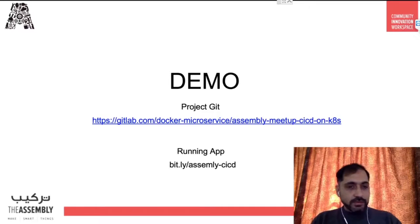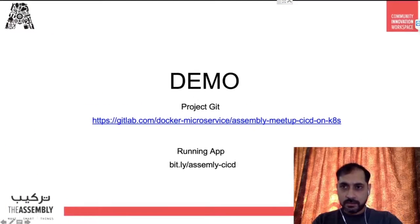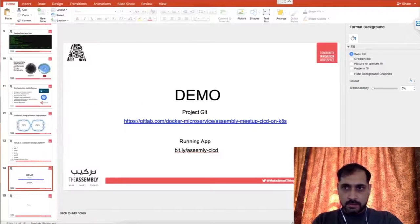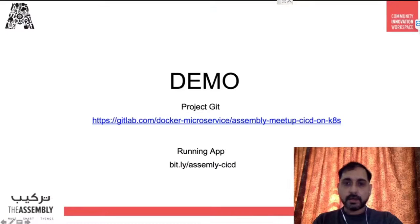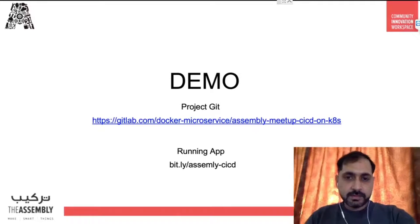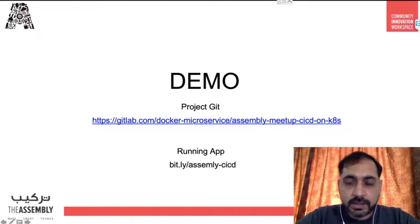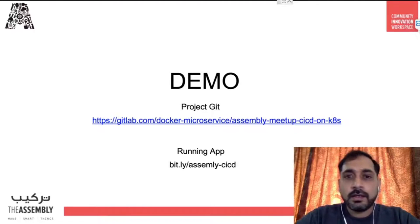Let me start with the demo part. This is my GitLab repository, and the running application will be on this bit.ly link. Let me jump into the code. I have prepared this application — it's a very basic sample application with a server and a client side. The server lives here and the client is a simple Angular client written in AngularJS, with a simple Node server. It has some basic socket features, but we won't deep dive into the code itself.